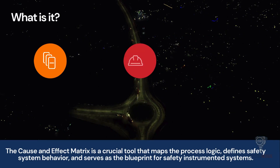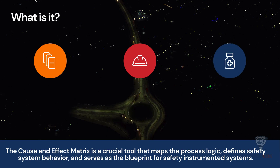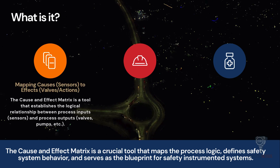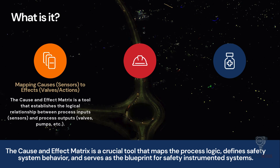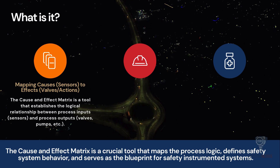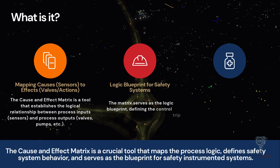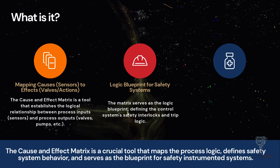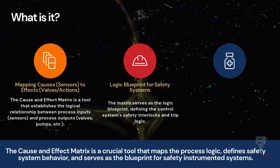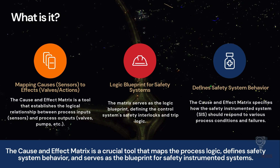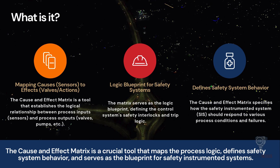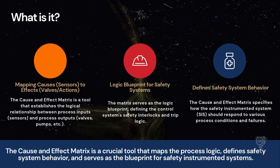So, what exactly is a cause and effect matrix? In the simplest terms, it is a tool used to map the relationship between process sensors, which we call causes, and the actions taken by valves or pumps, which we call effects. Think of it as the logic blueprint for your safety critical applications. In a complex processing plant, you have hundreds of inputs and outputs. This matrix organises them into a grid that defines exactly how the Safety Instrumented System, or SIS, serves to control the plant. It establishes the logical relationship between a specific process input and its required output, ensuring that everyone, from designers to operators, has a clear, comprehensive understanding of the system's behaviour.